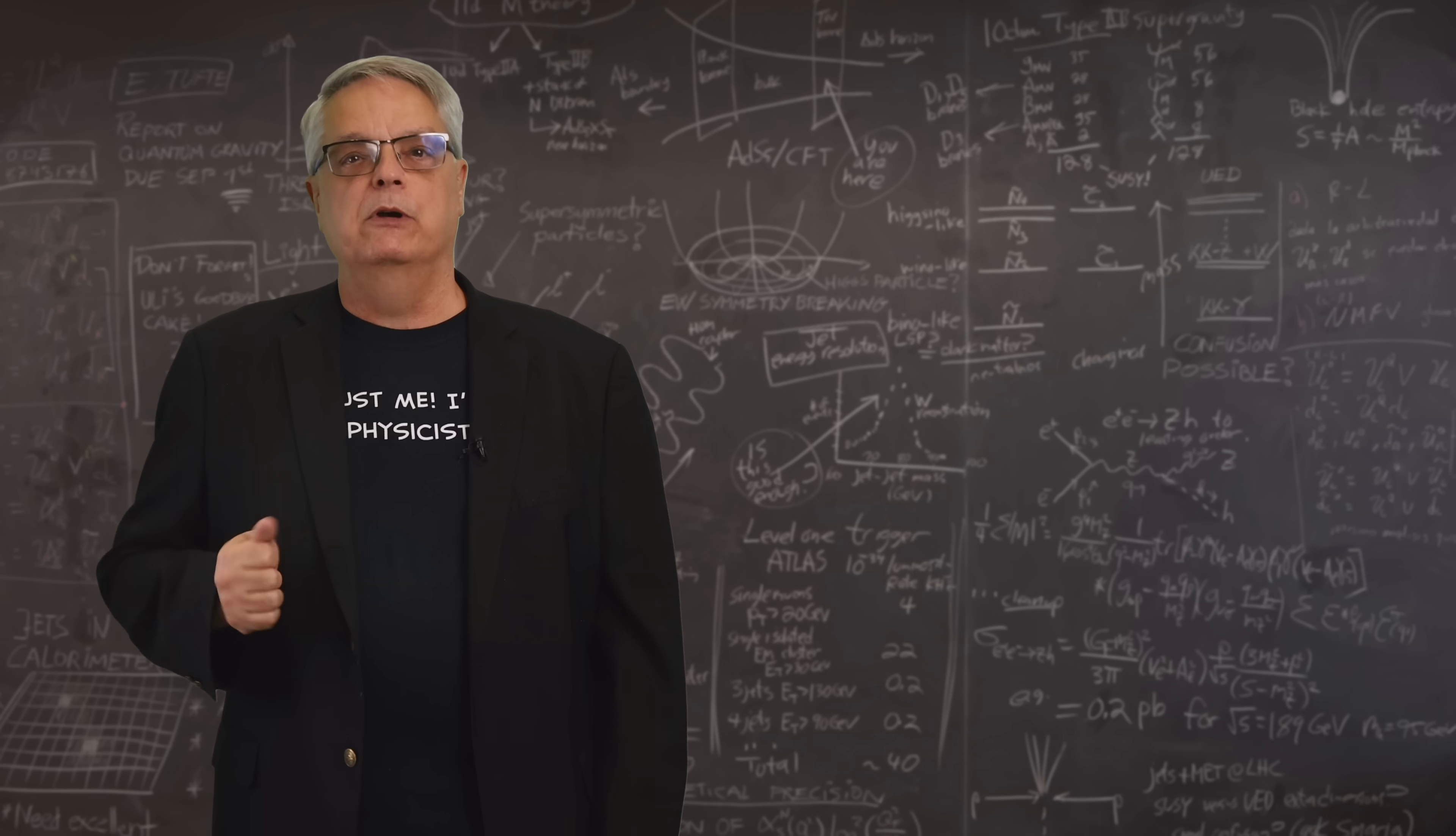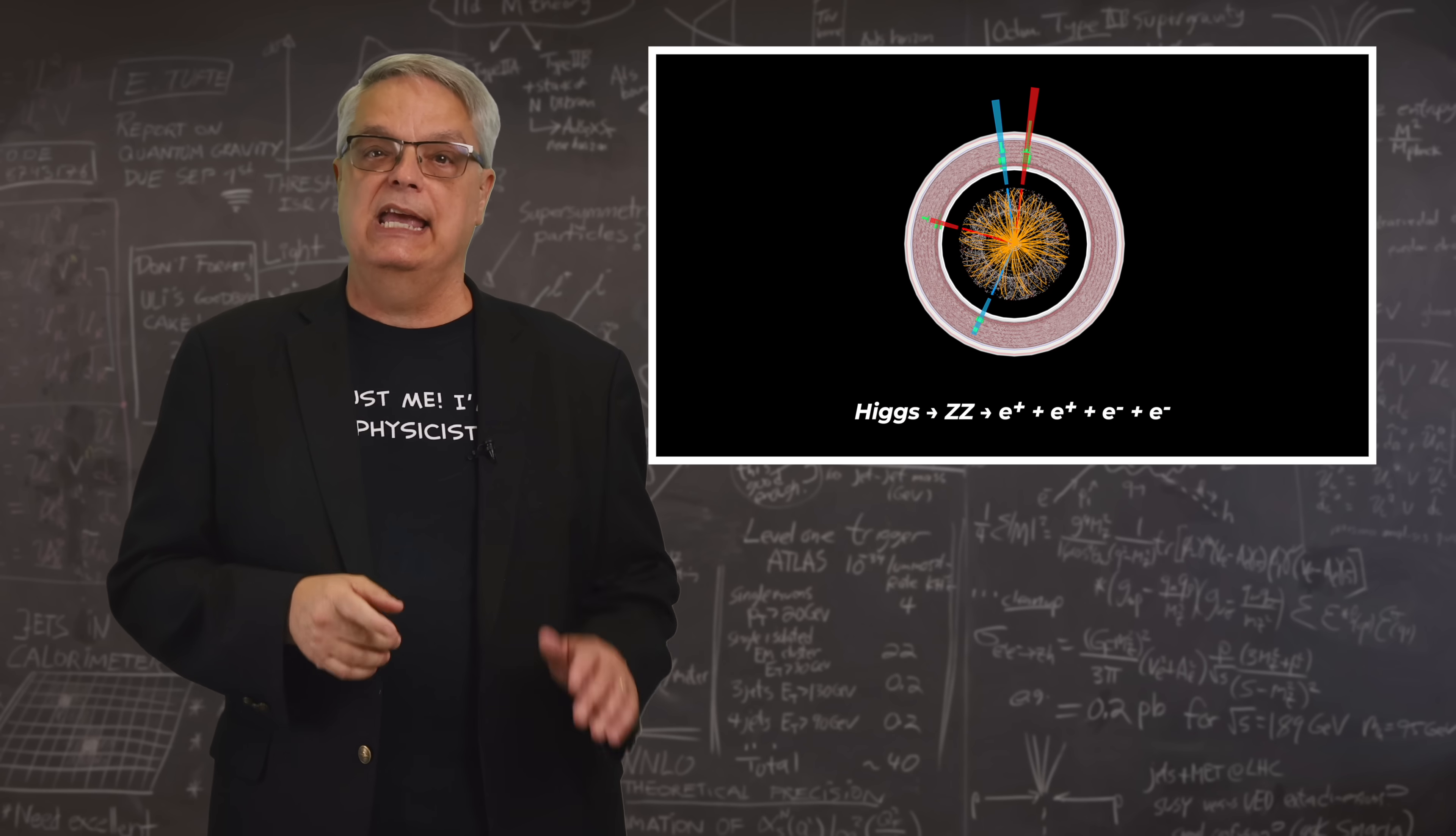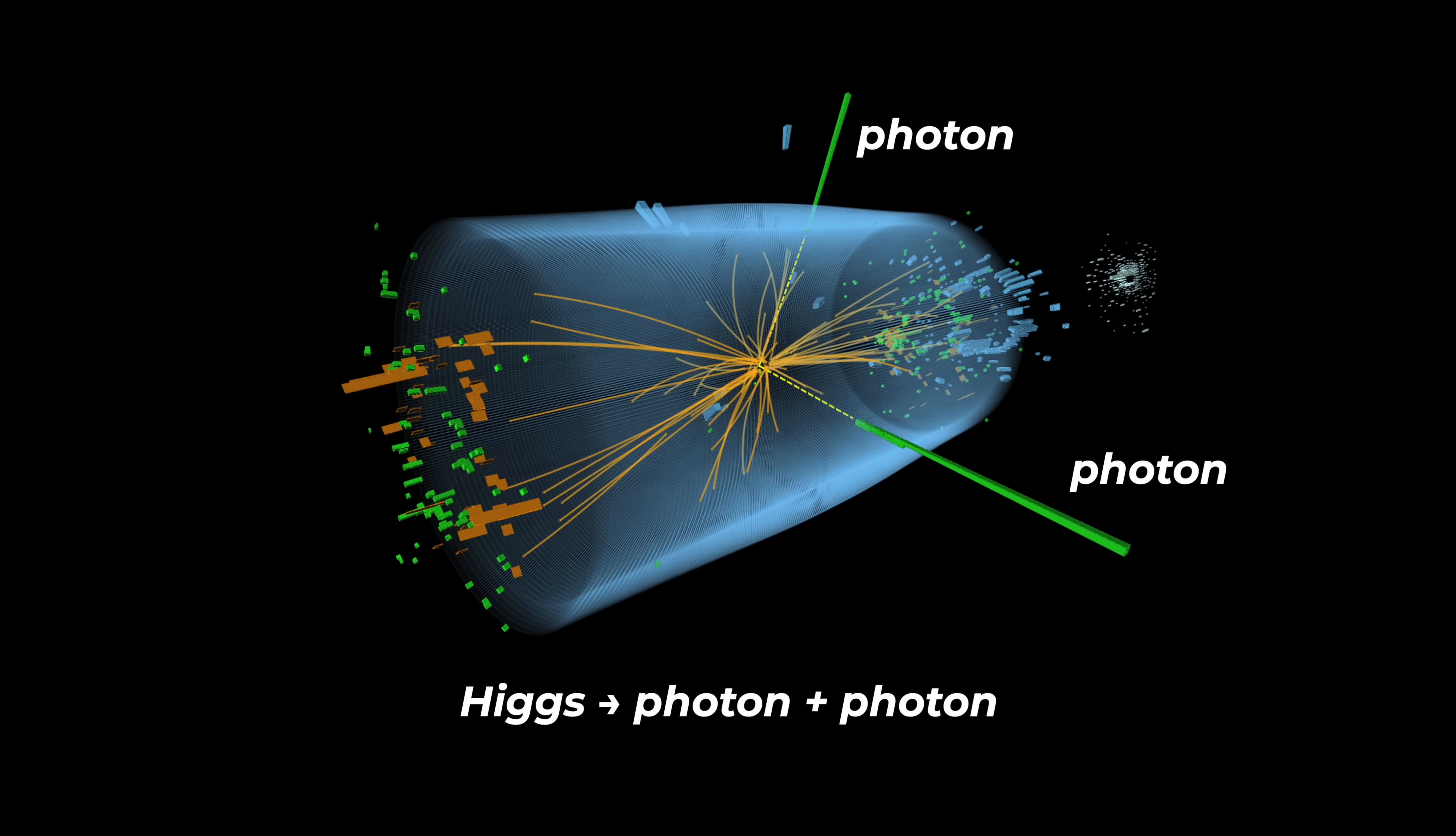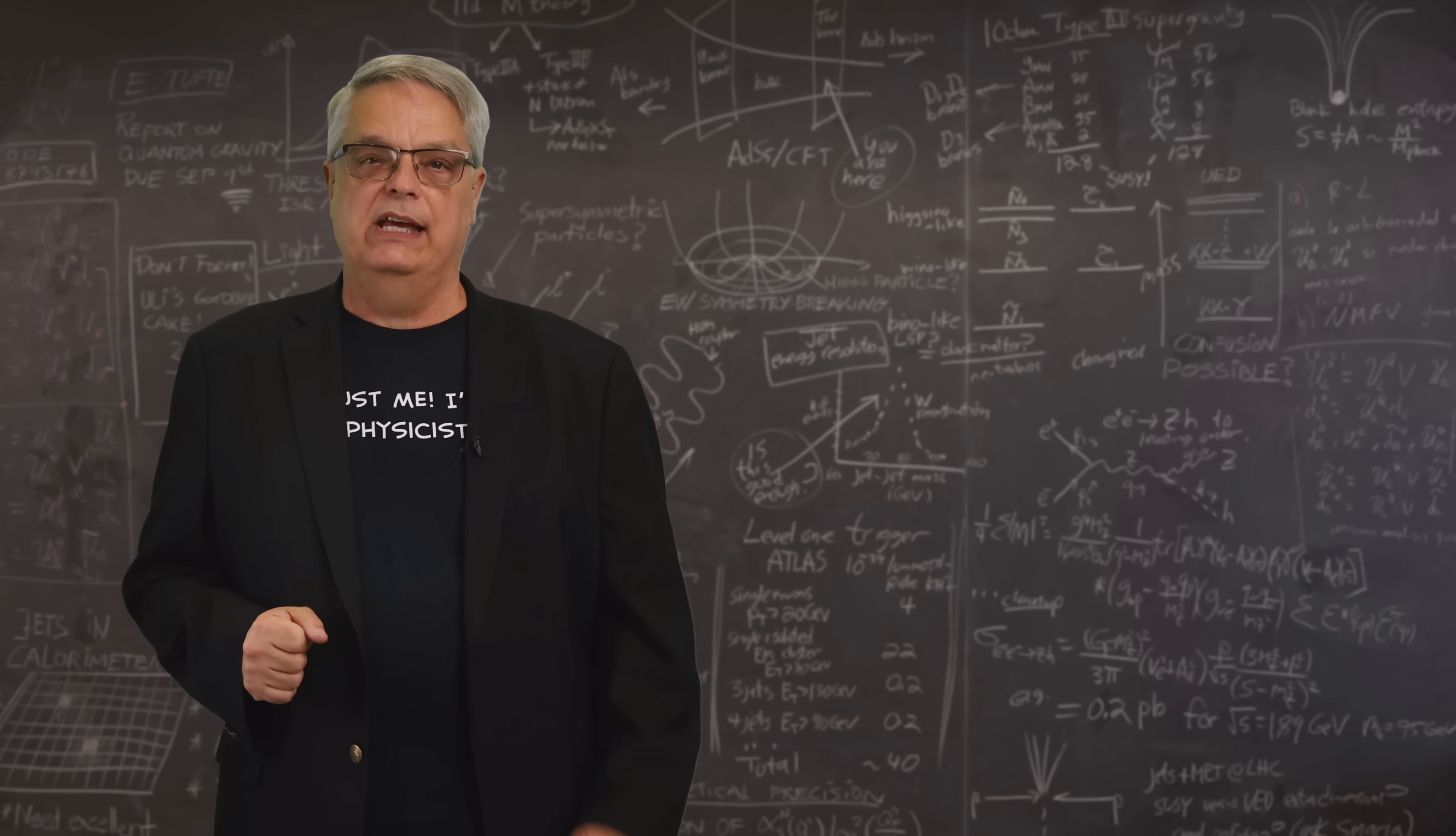So that's what the LHC experimenters did. They looked for super clean, but super rare examples of Higgs bosons and decays. One of the LHC experiments called ATLAS looked for Higgs bosons decaying into pairs of Z bosons, pairs of W bosons, or pairs of photons. They looked for other decays too, but those were the biggies. The other LHC experiment, called CMS, did basically the same thing. For example, here is an event in which the Higgs boson decayed into two photons. And then they collected lots of data.